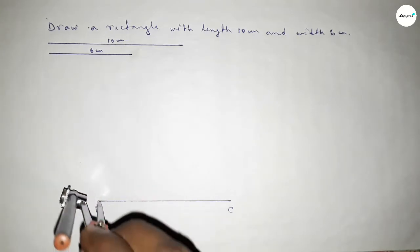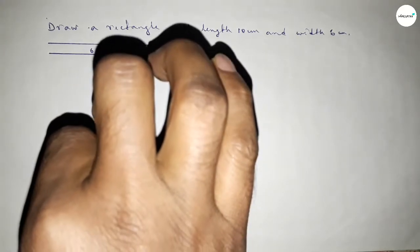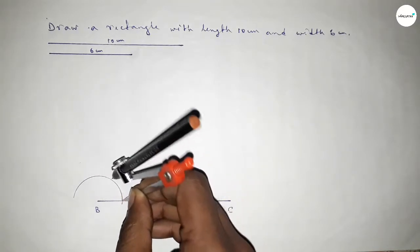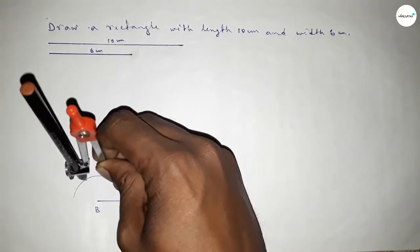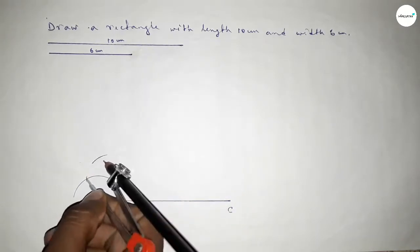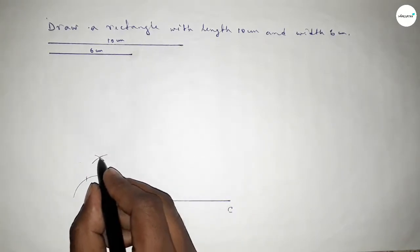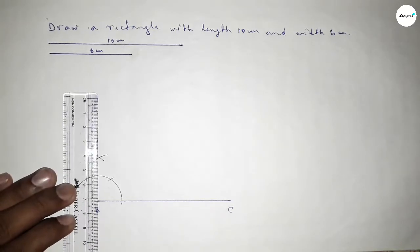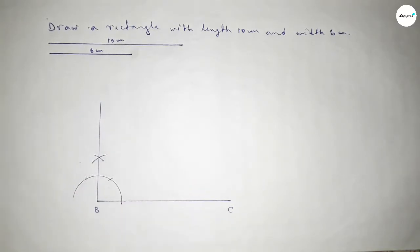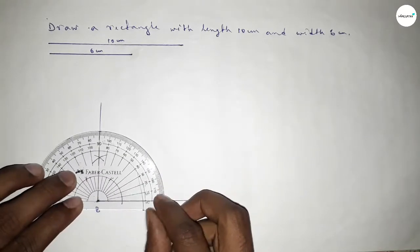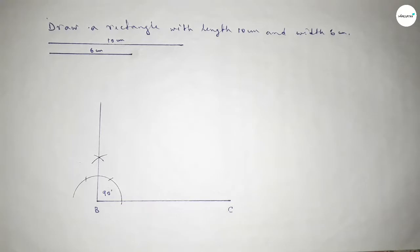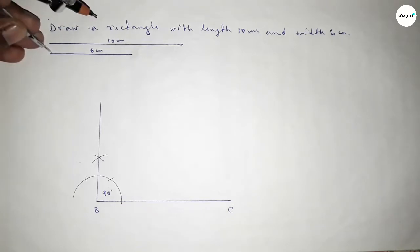Putting the compass on point B, taking any length and drawing an arc. With the same length, putting the compass here and cutting here, then putting the compass here and cutting here, drawing an arc. Both curves intersect at a point. Joining this side to get a 90 degree angle — checking, this is perfectly a 90 degree angle.